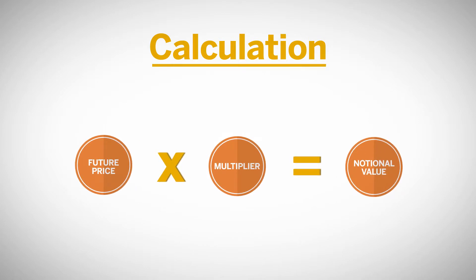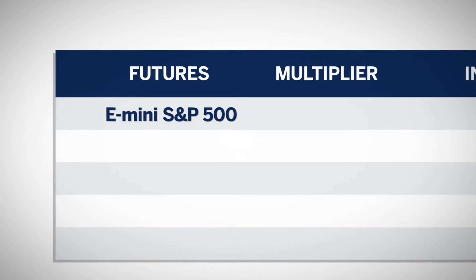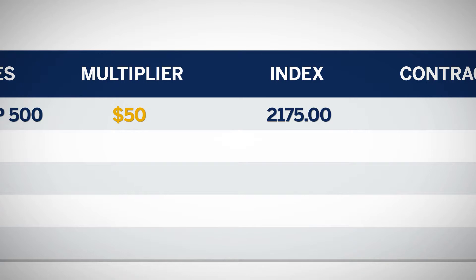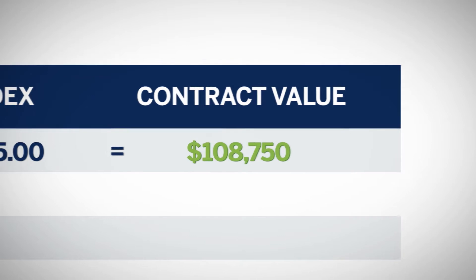The math for calculating notional value is the same for all Equity Index Futures, but the multiplier will change with each contract. For example, the E-mini S&P 500 Futures contract has a fixed multiplier of $50. If the E-mini S&P 500 Futures is trading at $2,175, then its notional value would be $2,175 times $50, which equals $108,750 per contract.